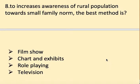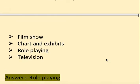Next question: To increase awareness of the rural population towards the small family norm, the best method is — options: film show, chart and exhibition, role playing, and television. The right answer is role playing.